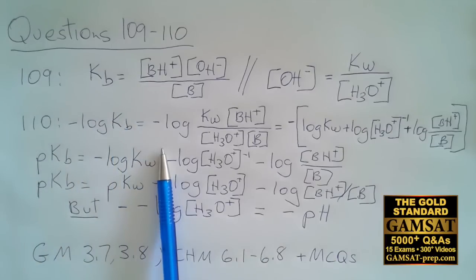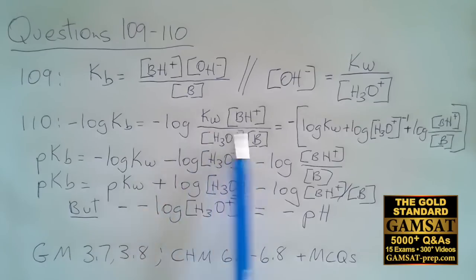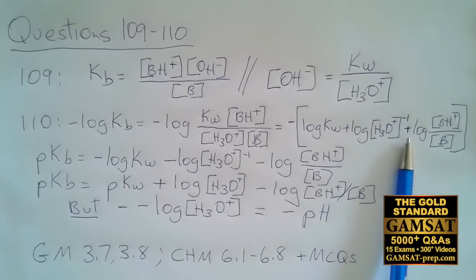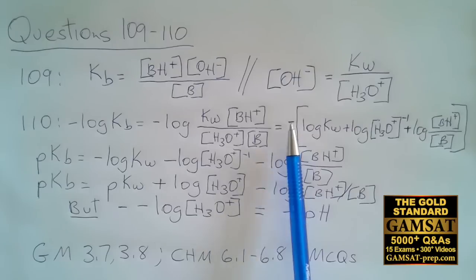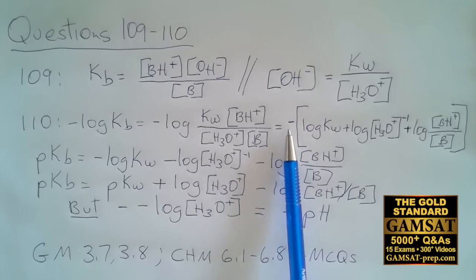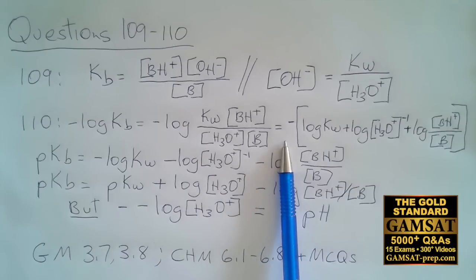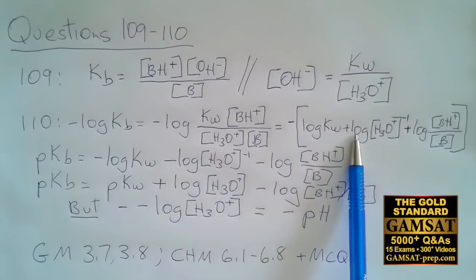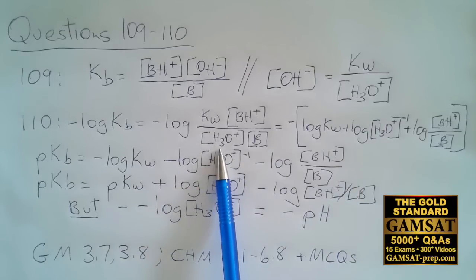We take the negative log of KB and the negative log of answer choice A from question 109. We're seeking an expression for pKB, so we need to take the negative log of KB and apply our logarithm rules. When we have the logarithm of things that are multiplied, we can separate them and add them. As a precaution, I'm taking the negative sign out to deal with it later, giving us log Kw plus log of 1 over H3O+.